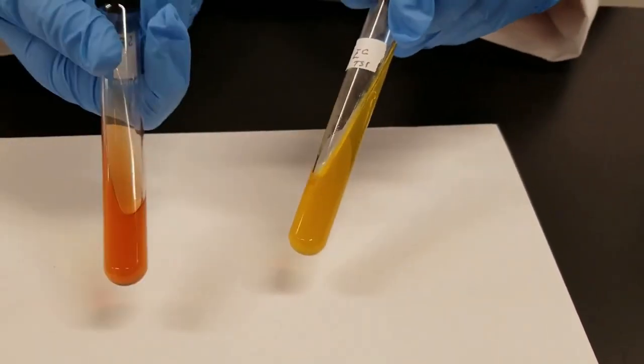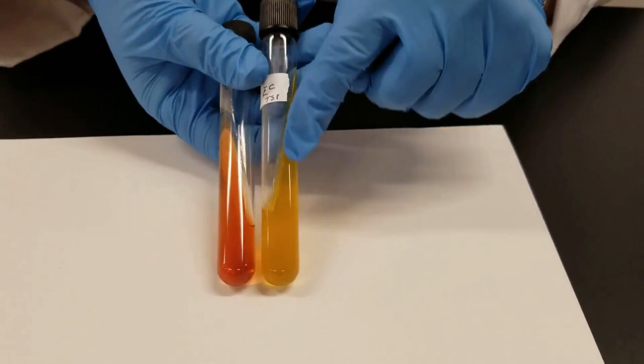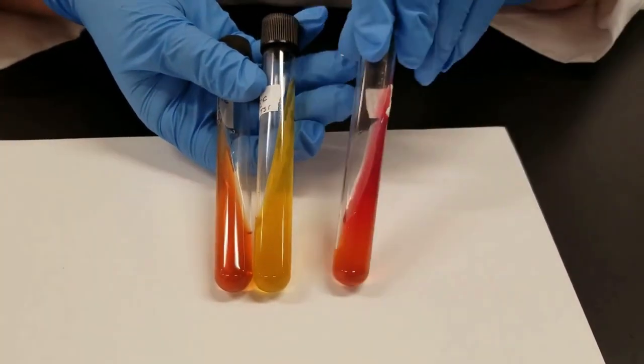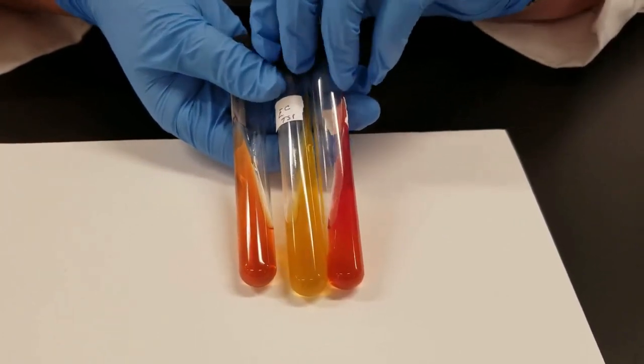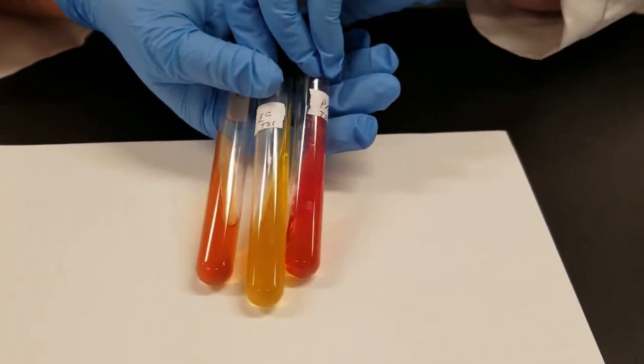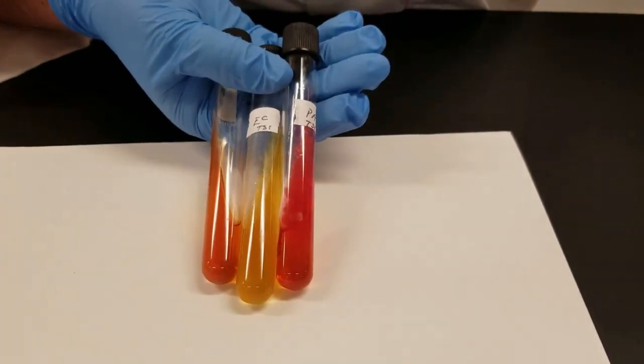So this is the un-inoculated. Here's acid acid. And here is alkaline alkaline, just to give you some comparison purposes. Now, a fourth tube I'm going to add, Proteus vulgaris.